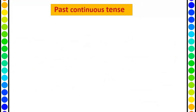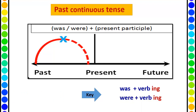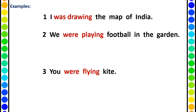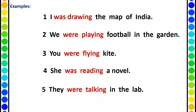Now past continuous tense. As you read in the present tense, continuous means 'ing'. So here we are talking about something which was continuous in the past — now it is over but it was happening then. The key words are helping verb 'was'/'were' plus 'ing' added to the verb. Verb and 'ing' together is known as the present participle. Examples: I was drawing the map of India. We were playing football in the garden. You were flying a kite. She was reading a novel. They were talking in the lab. Notice the highlighted words with 'was'/'were' and the 'ing' form.